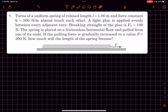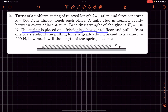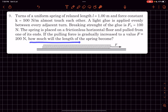We have 50 turns of a uniform spring of relaxed length 1 meter and force constant of 500 newtons per meter that almost touch each other. A light glue is applied evenly between each adjacent turn. The breaking strength of the glue is 100 newtons. The spring is placed on a frictionless horizontal floor and pulled from one of its ends. If the pulling force is gradually increased to 200 newtons, how much will the length of the spring become? We have to determine the final length of the spring.